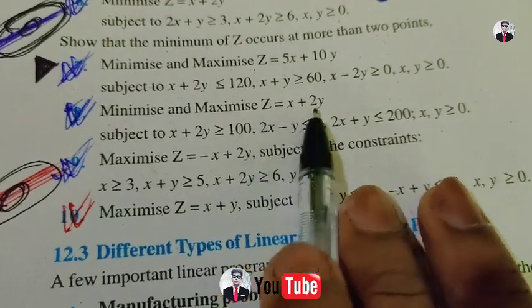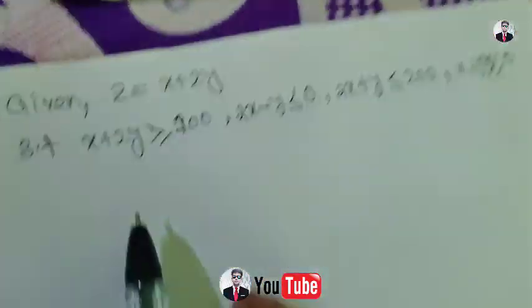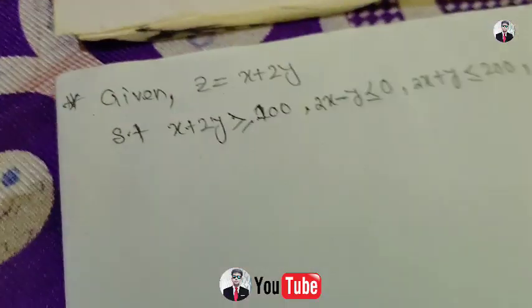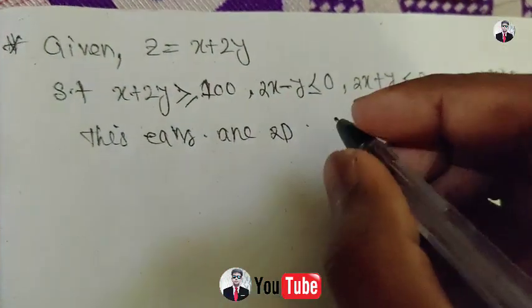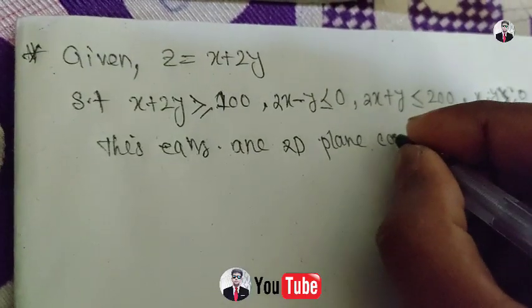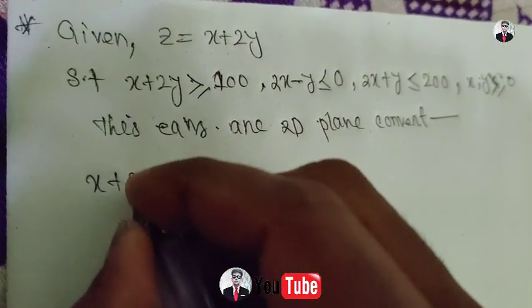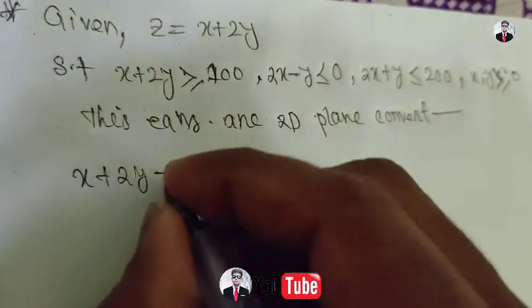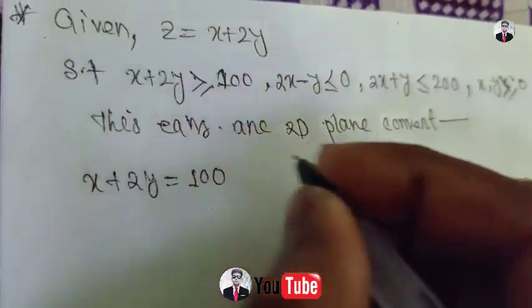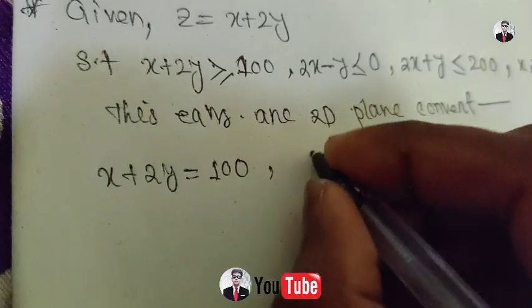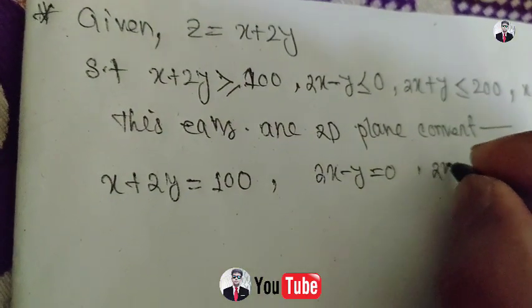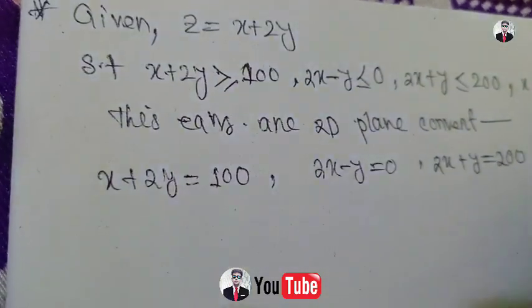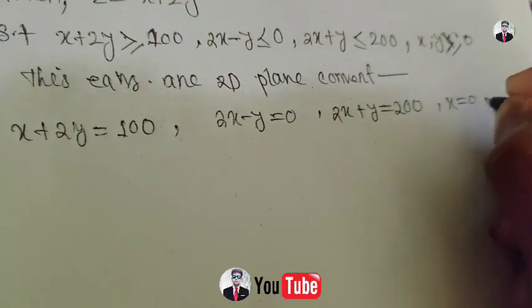The general constraints are: X plus twice Y — let me show the given equations. I'm going to represent these equations in a 2D plane. The equations are: x plus twice y, converted into a two-dimensional plane. Also, twice x minus y equal to zero, and twice x plus y equal to 200, with x equal to zero and y equal to zero.